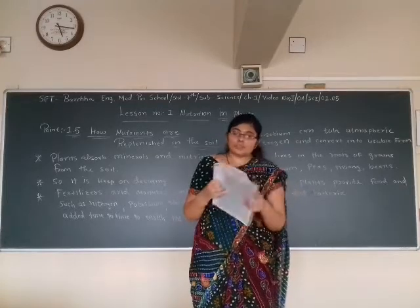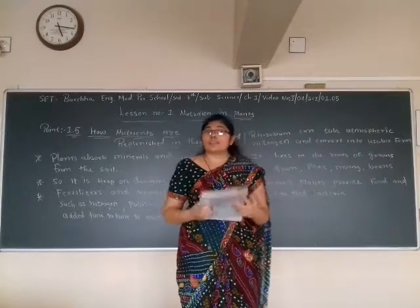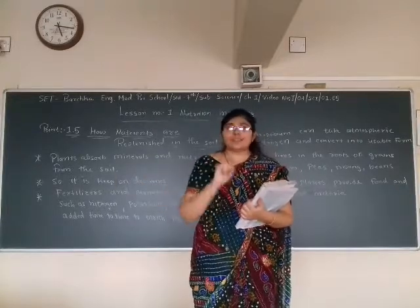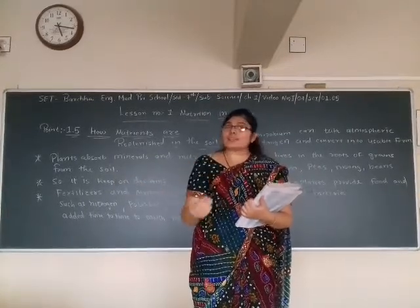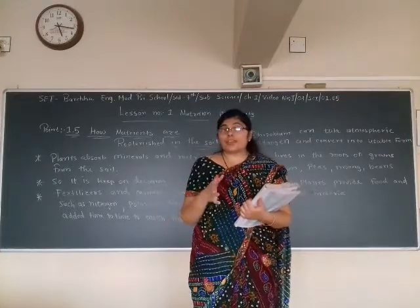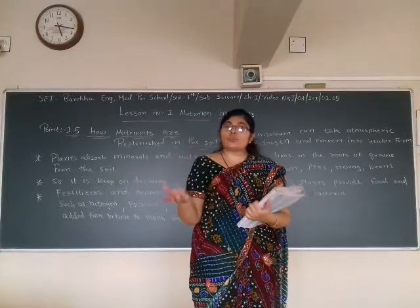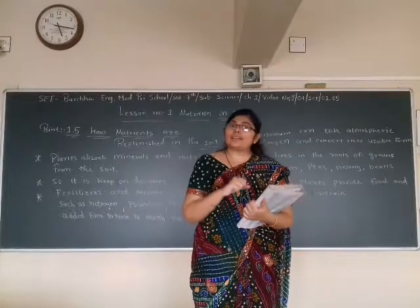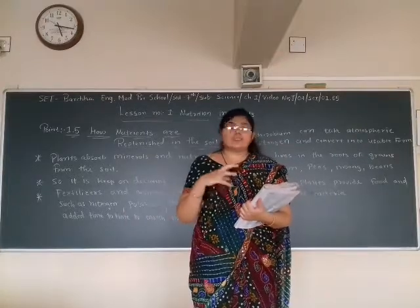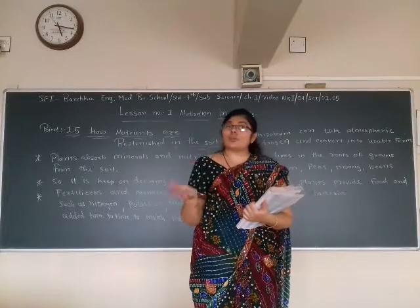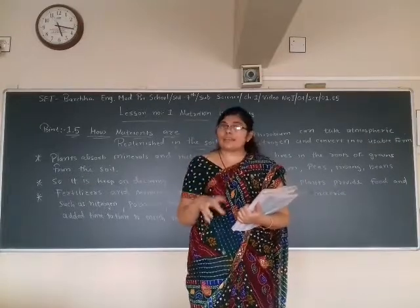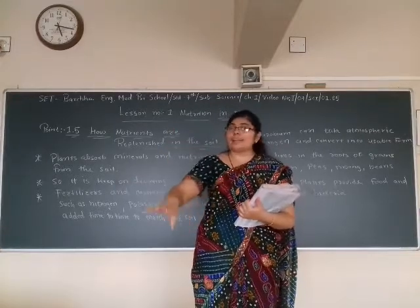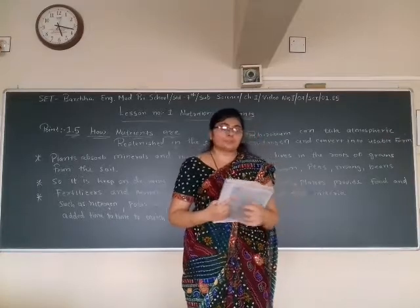Where leguminous plants are grown, nitrogen is replenished naturally. For example, once a farmer gets the crop of wheat in one season, for the next immediate crop, if they grow pulses like moong beans, the nitrogen is replenished automatically in the soil. This is because in the region where these pulse plants like moong bean are grown, rhizobium bacteria in the roots take atmospheric nitrogen and provide it to the soil.